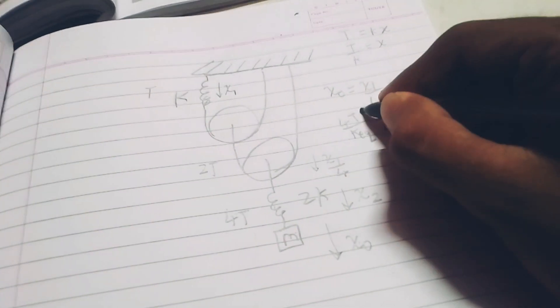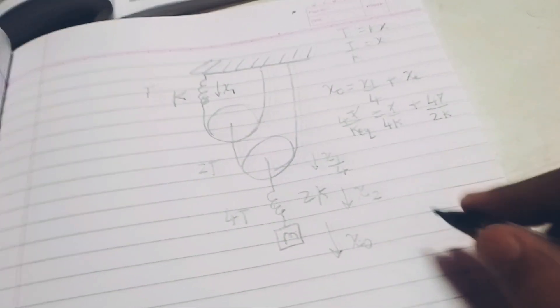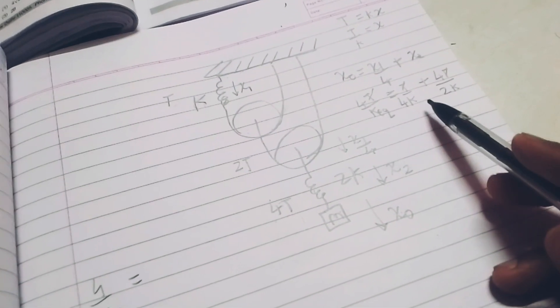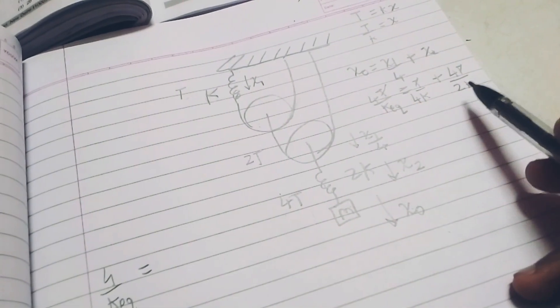Now, tension will cancel out from everywhere and I am left with 4 by k equivalent is equated with 1 by 4k plus 2 by k.